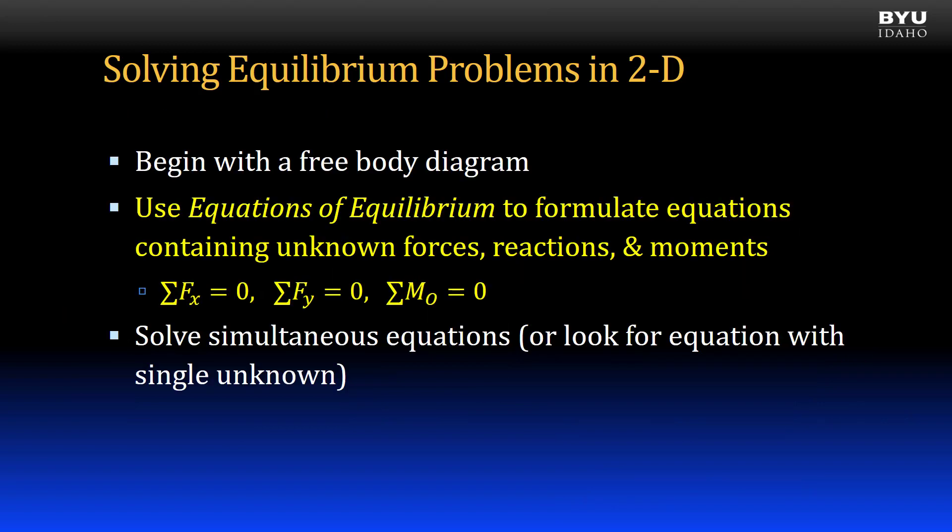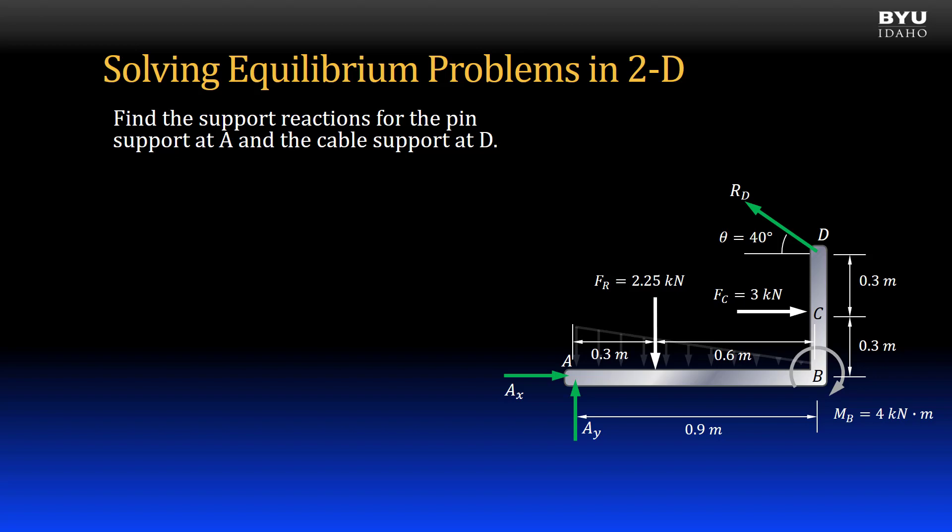Next, I will consider what equilibrium equations I have to use and at what point it makes the most sense to sum moments. Note that there are three unknowns: Ax, Ay, and RD. I will need three equations of equilibrium to find them. Let me list out the possible equilibrium equations.